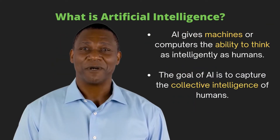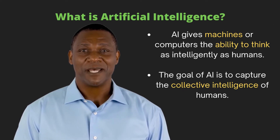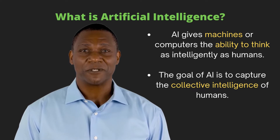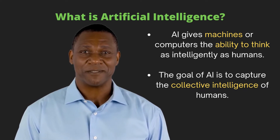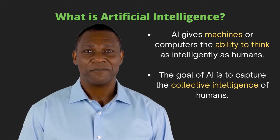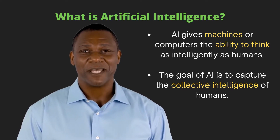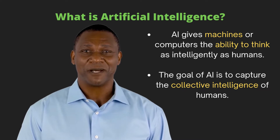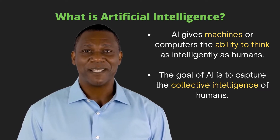What is artificial intelligence? Artificial intelligence, or AI, is the branch of computer science that focuses on giving machines or computers the ability to think as intelligently as humans — and in some cases better than humans — by learning from a lot of data. The goal of AI is to capture the collective intelligence of humans and do a given task better than any individual human can ever do.